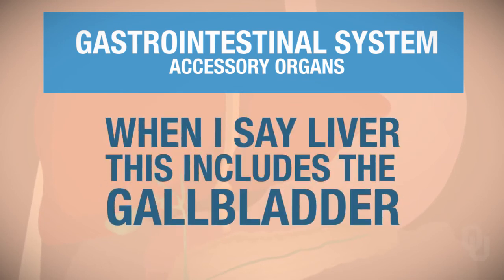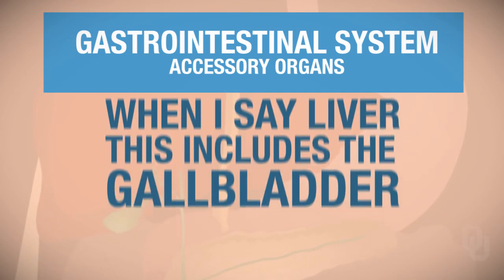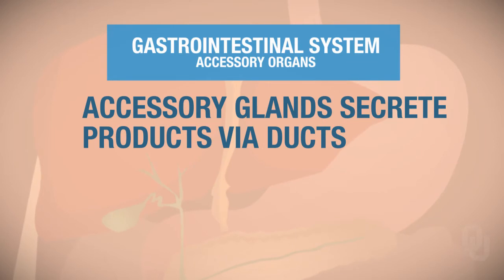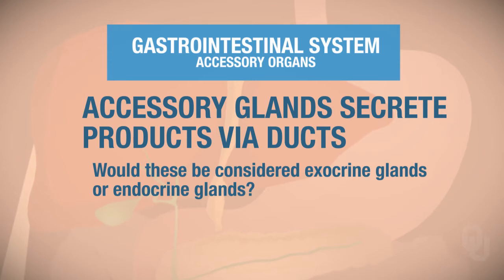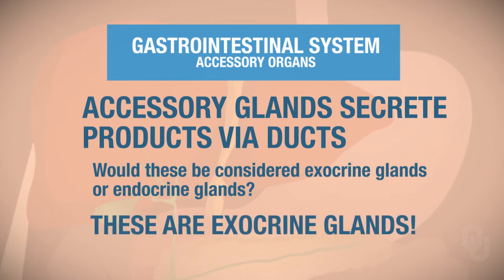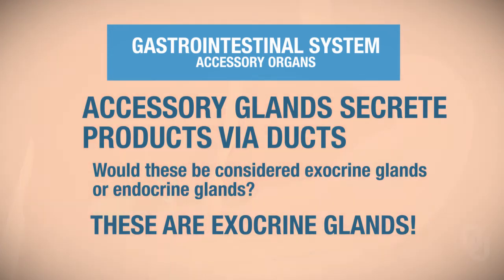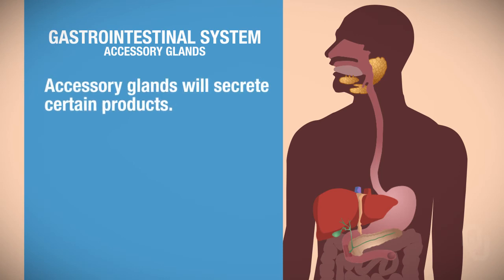When I say liver, that would include the gallbladder. Accessory glands are going to secrete products via some ducts. So, would these be considered exocrine glands or endocrine glands? Hopefully you said exocrine glands, because exocrine glands are associated with ducts.